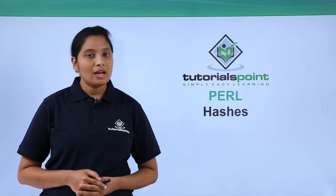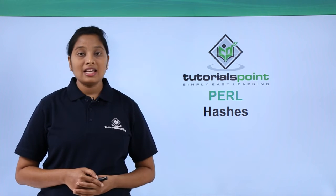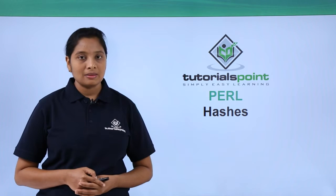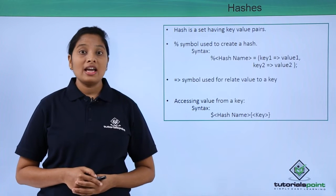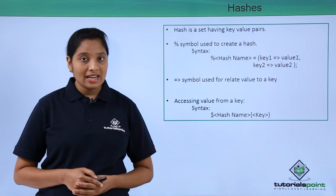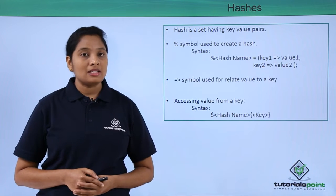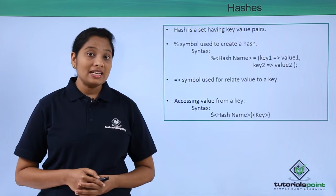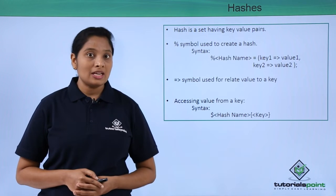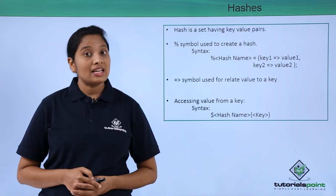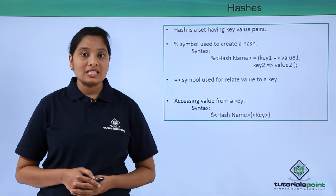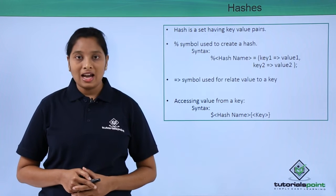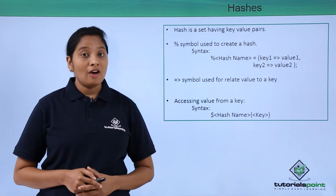Welcome to Tutorials Point. In this video I'm going to explain about the third data type called hashes. A hash is a set of key-value pairs. To declare a hash, use the symbol percent followed by the hash name, equal to, and then give the key-value pairs enclosed in brackets. To relate the key to the value, use the symbol equal to followed by the greater-than symbol.